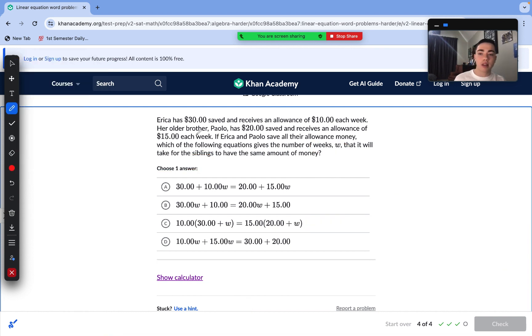Last question here. Let's get to it. Erica has $30 saved and receives an allowance of $10 each week. Her older brother, Paolo, has $20 saved and receives an allowance of $15 each week. If Erica and Paolo save all their allowance money, which of the following equations gives the number of weeks it would take for the siblings to have the same amount of money?